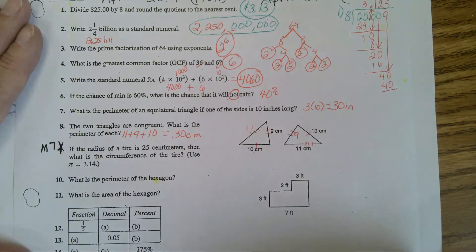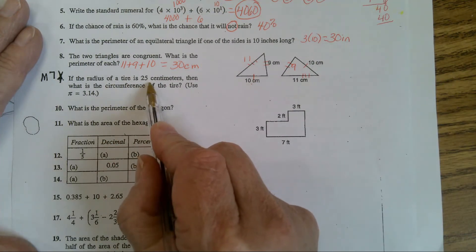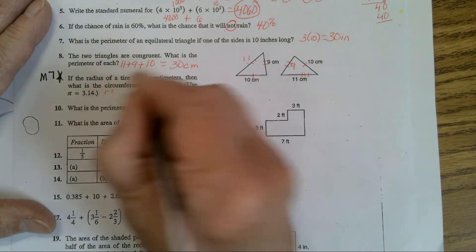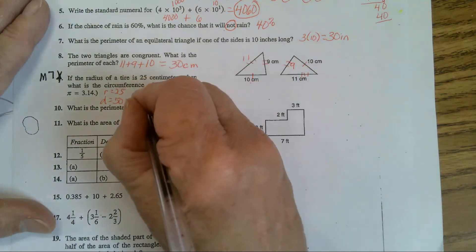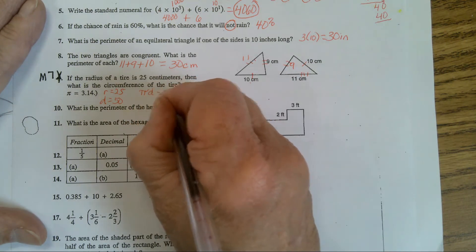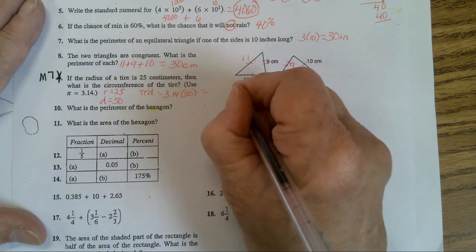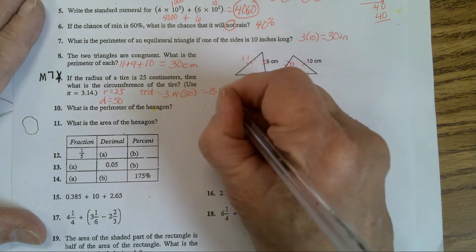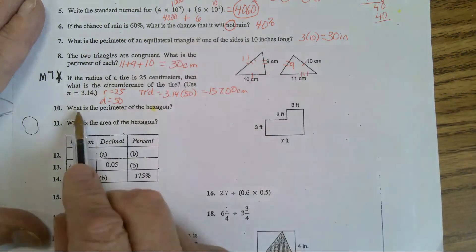Now you're in 7th grade, so you have to do this one. If the radius of a tire is 25 centimeters, then what is its circumference? So if the radius is 25, that means the diameter is what? 50. And the circumference is pi times diameter. So you're going to have 3.14 times 50. And that will give you the answer, 157 centimeters.